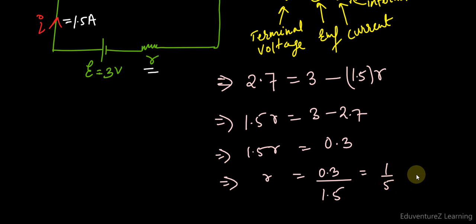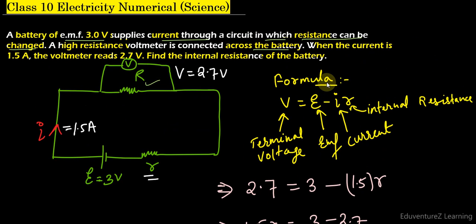So it will be 1 upon 5 or you can say it as 0.2 ohm. So this is our final answer. I hope that you have understood this solution. Thank you very much for watching.